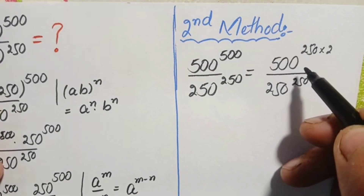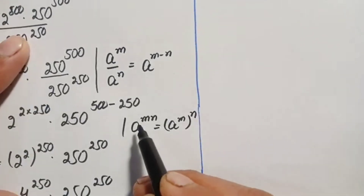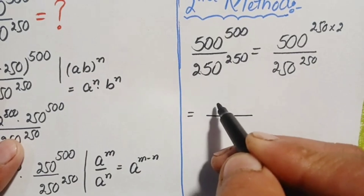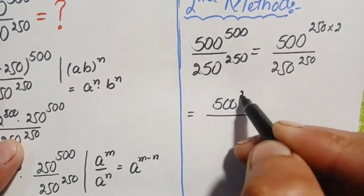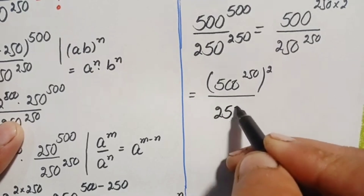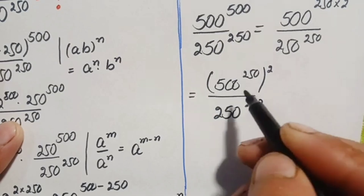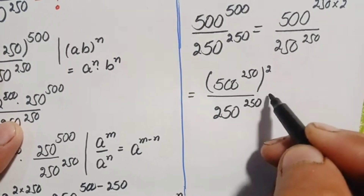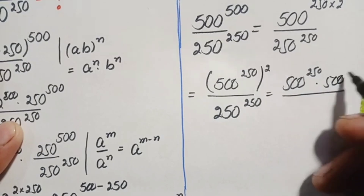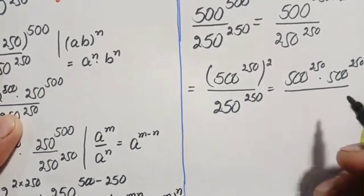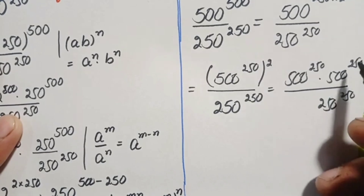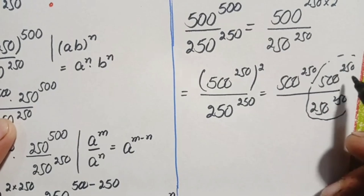Here we use an exponential identity to change the power from one form to another. The numerator becomes 500 raised to power 250 times 2, which we rewrite as 500 raised to power 250, whole squared. Since there is a square over this number, we expand it as 500 raised to power 250 times 500 raised to power 250, divided by 250 raised to power 250.